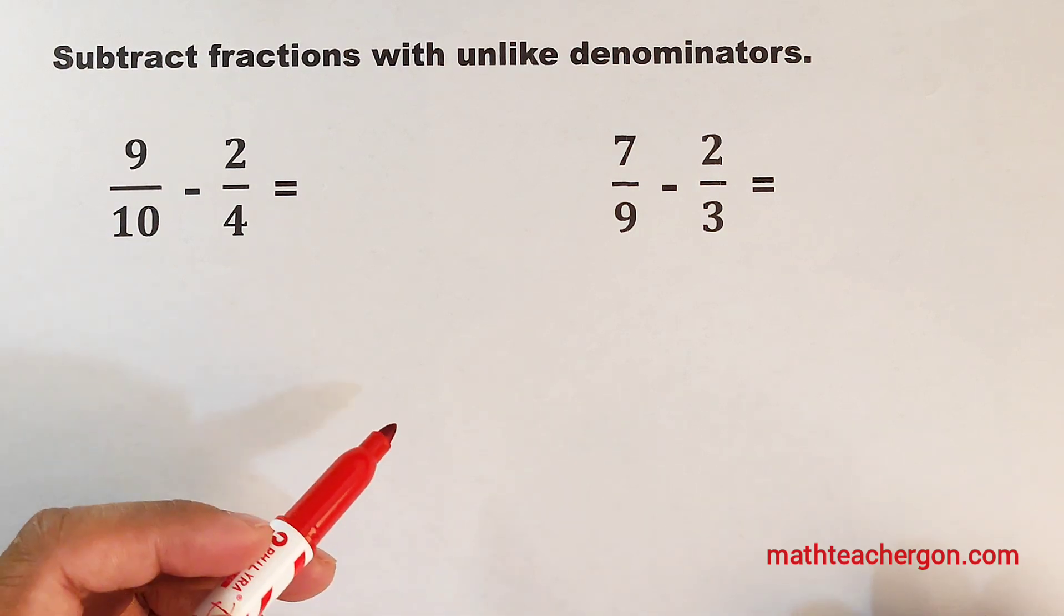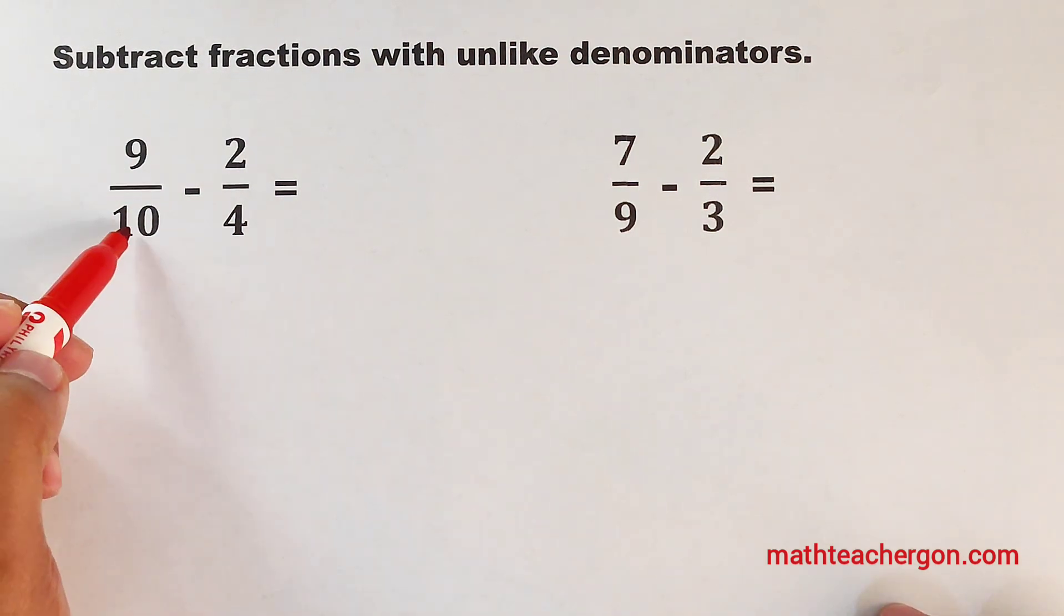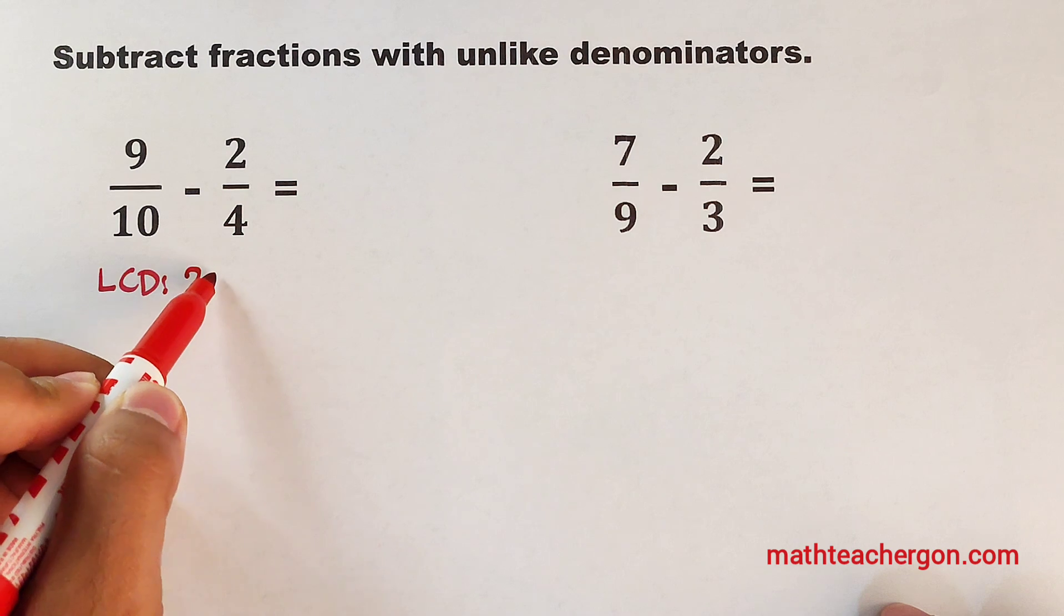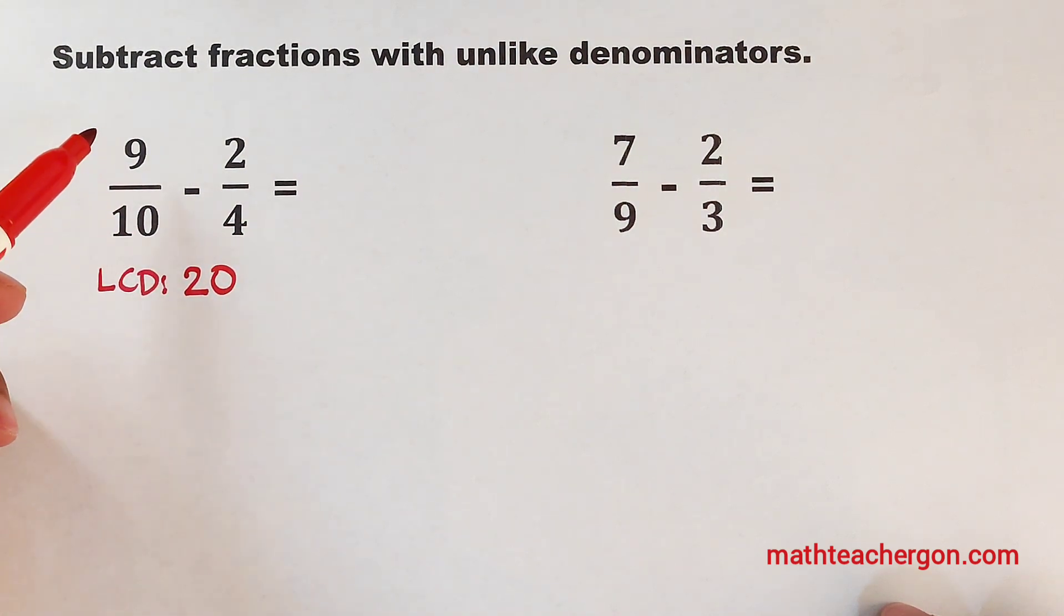Okay, let's continue answering it. We have 9 over 10 minus 2 over 4. So as you can see, we have 10 and 4. The question here is that, what is the LCD of 10 and 4? The answer is 20. So meaning, we will think of the numbers that we need to multiply to 10 and 4 to make it 20.